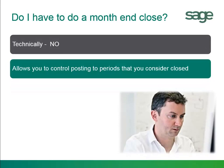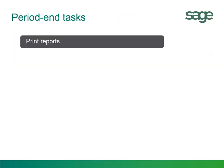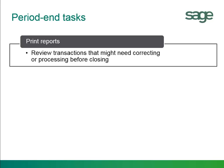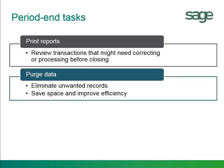Do you have to do a month-end close? Well, technically no, but we do recommend that you do a month-end. This will allow you to keep cleaner transactions when doing period-end, so when you do an inquiry on vendors or customers and you select a period-end, you'll get correct statistics. Period-end tasks are normally printed reports so that you can review your transactions that need correcting before closing the year. You have the ability to purge data, which allows you to clear away inactive records, clear history, clear posted transactions, and clear your statistics for your vendors and customers.